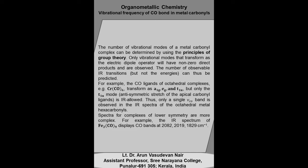The number of vibrational modes of a metal carbonyl complex can be determined using the principles of symmetry and group theory. Only vibrational modes that transform as the electric dipole operator will have a non-zero direct product, and for those vibrational modes we can obtain an FTIR spectrum. For example, consider the octahedral complex Cr(CO)6. It transforms as A1g, Eg, and T1u, but only the T1u mode is IR allowed. Thus, only one signal — the CO band — is observed in the IR spectrum of octahedral Cr(CO)6.